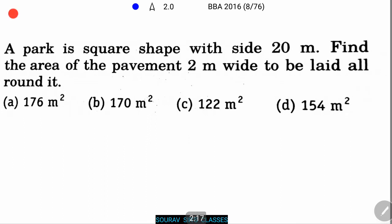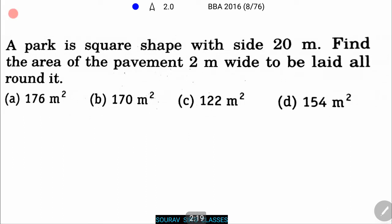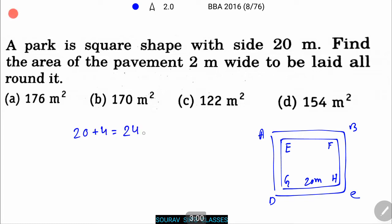A park is square shape with the side 20 meter. Find the area of the pavement 2 meter wide to be laid all round it. Here are the four options: 176 meter square, 170 meter square, 122 meter square, and 154 meter square. It's 20 meter E F G H D. Now, given ABCD is a square whose side is 20 plus 4 equals 24 meter square.